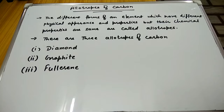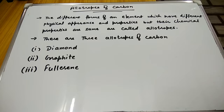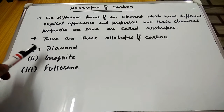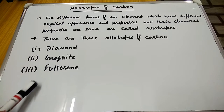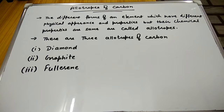So allotropes have the same chemical properties but different physical appearance. There are basically three types of allotropes of carbon: first is diamond, second is graphite, and third is fullerene, sometimes also known as Buckminster Fullerene.